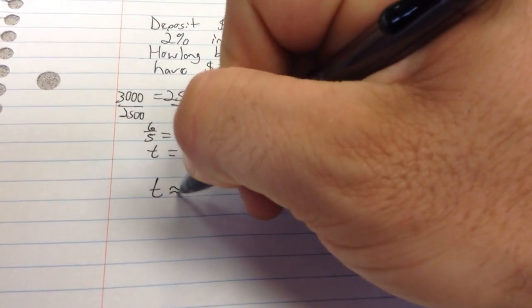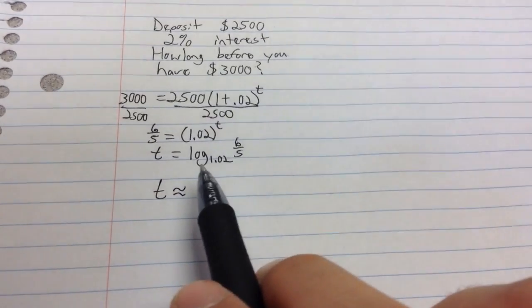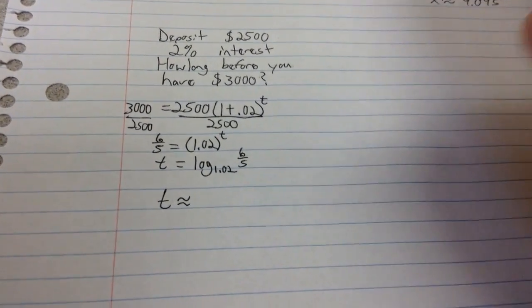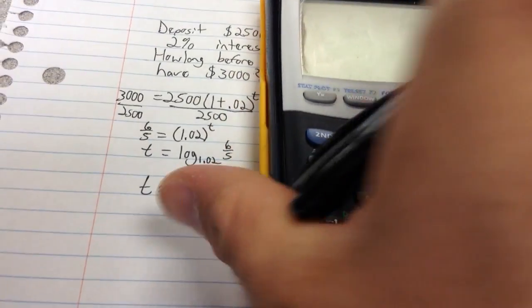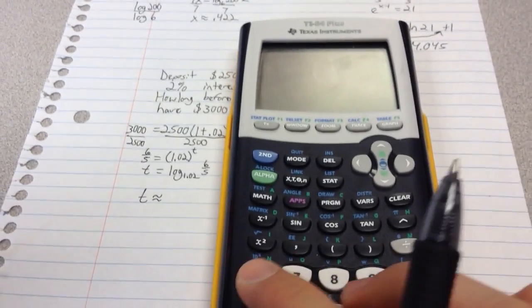So my time is going to be approximately whatever this value of this logarithm is here. Again, that's where the calculator comes in handy because I can use the base on the calculator of base 10.